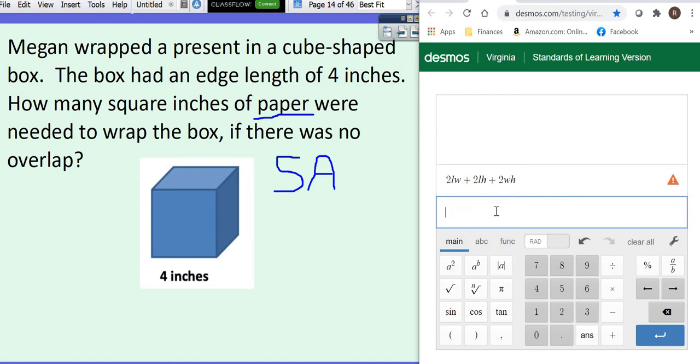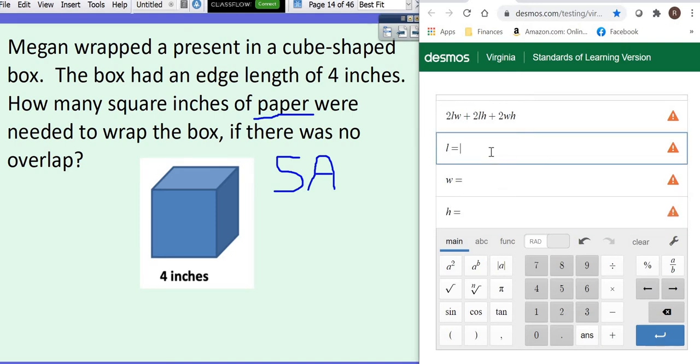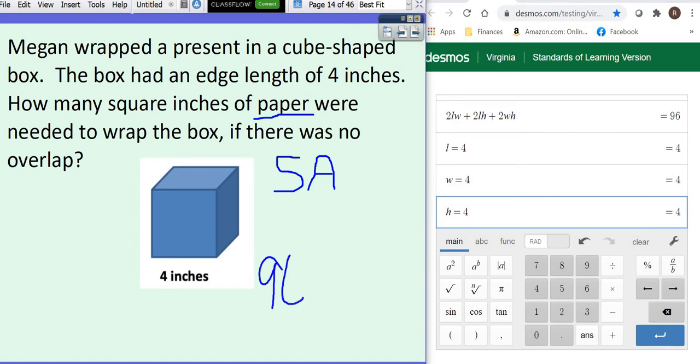Then we need to go through, and the calculator does not know what L is, so we have to tell it. The calculator does not know what W is, so we have to tell it. The calculator does not know what the H is, so we have to tell it. Since it's a cube, that makes it easy because everything is exactly the same. So this means that you would need 96 inches squared of paper to wrap that cube since it is looking for surface area.